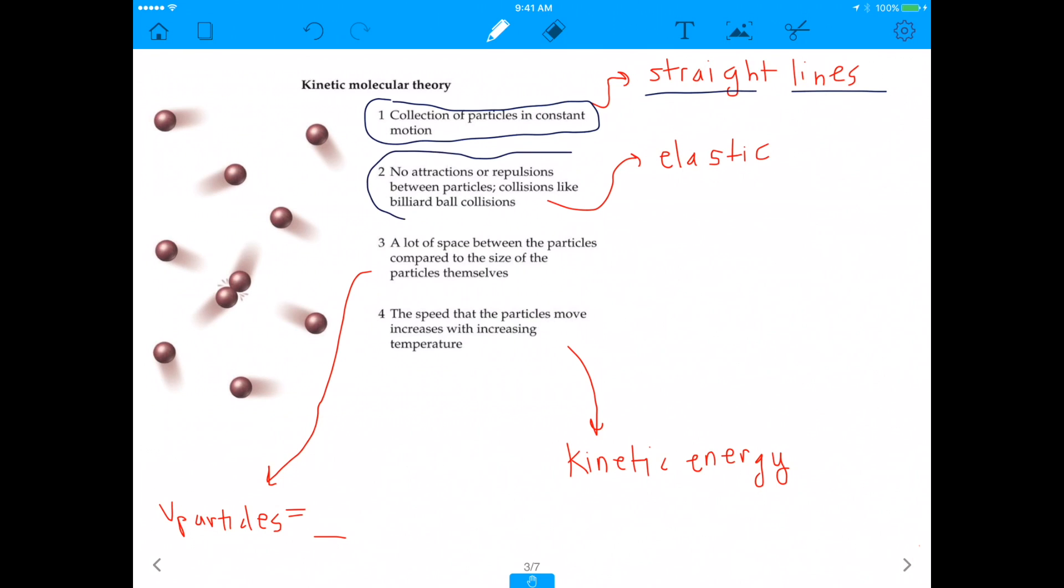The second thing is there are no attractions or repulsions between particles, and the collisions are like billiard ball collisions. What do I mean by billiard ball collisions? Billiard ball collisions are elastic. Elastic collisions are where kinetic energy is conserved, and what I mean by that is you don't lose any kinetic energy when these two gas molecules collide. You know, if one's going 25 miles an hour and it stops when it hits another one, then the other one that gets hit is going to start going 25 miles an hour, assuming they have the same mass.